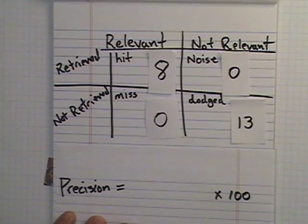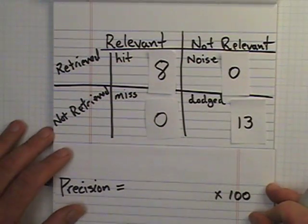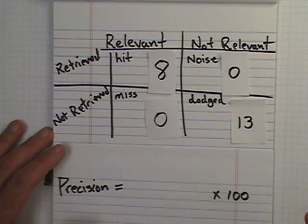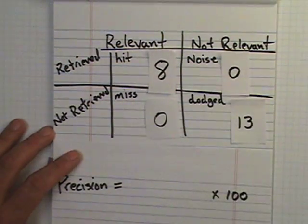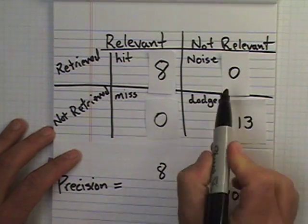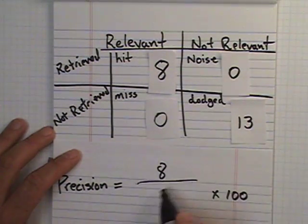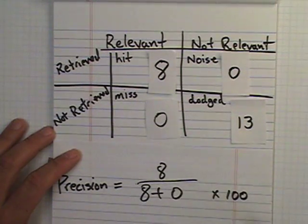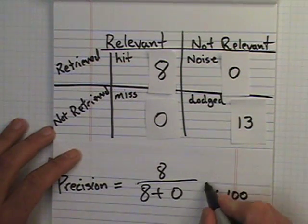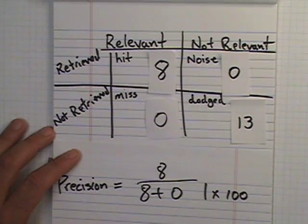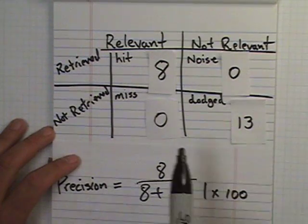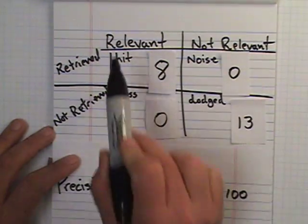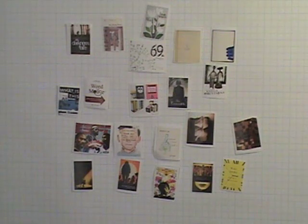Let's try another one now. Let's take a look at precision. Precision is the total number of relevant retrieved items over the total retrieved. And in this case, that's eight over eight plus zero, is one times 100 gets you 100%. So in this search, we had 100% precision because all the items retrieved were relevant.